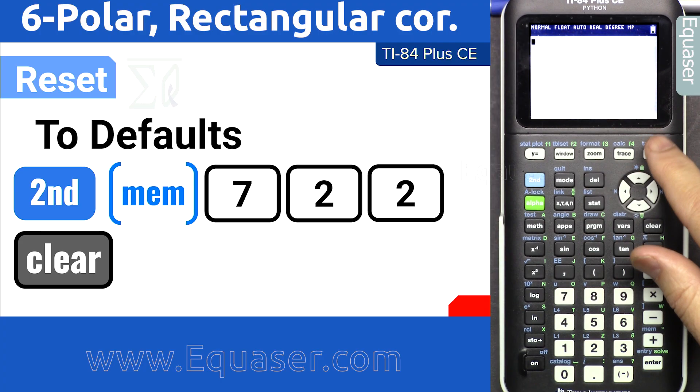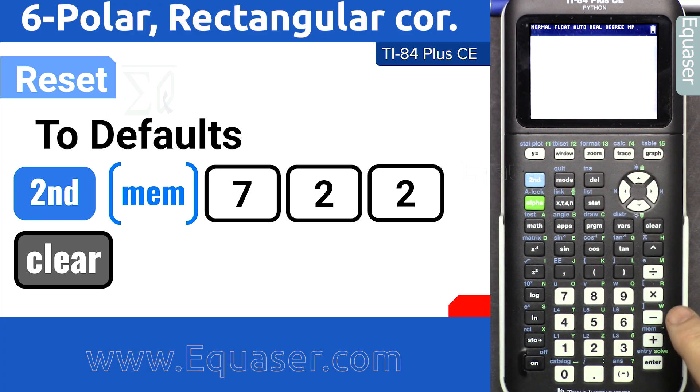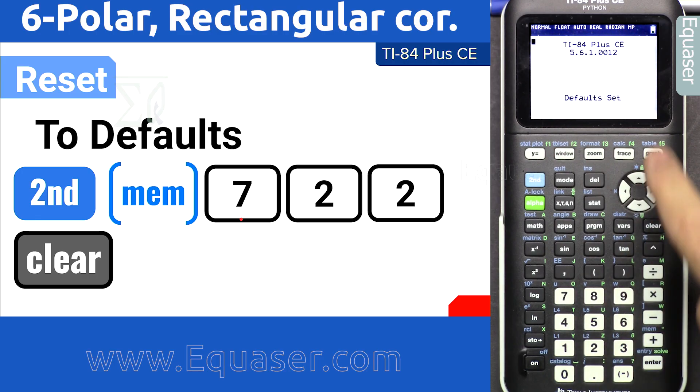Now let's set our calculators to default so we have the same settings. Press second function, MEM, and follow the screen: 7, 2, and then 2 reset. Press clear.